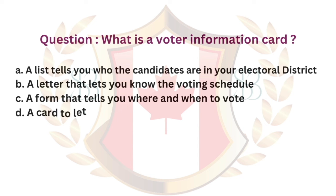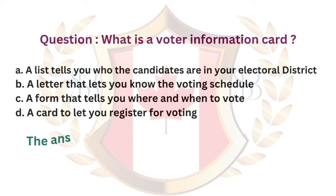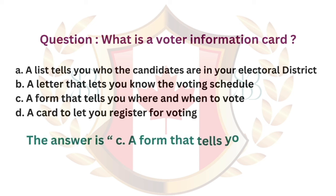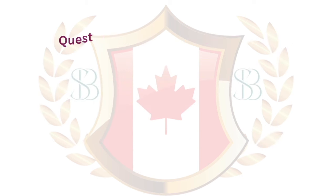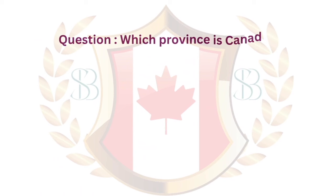Question about voter information cards. a. A list that tells you who the candidates are in your electoral district. b. A letter that lets you know the voting schedule. c. A form that tells you where and when to vote. d. A card to let you register for voting. The answer is c. A form that tells you where and when to vote.